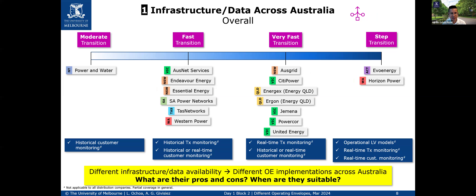This final slide leads into discussions of the different operating envelope implementations. Many companies across Australia have good levels of monitoring and electrical models, but not necessarily to the point of being ready for operating envelope implementation. So they need strategies to make the most of what they have. There's a realization that electrical models may not be the best route, and they need to come up with alternatives backed by added monitoring and good engineering decision-making. Given this different spectrum of data availability, we will have different operating envelope implementations, which Arthur will now discuss.